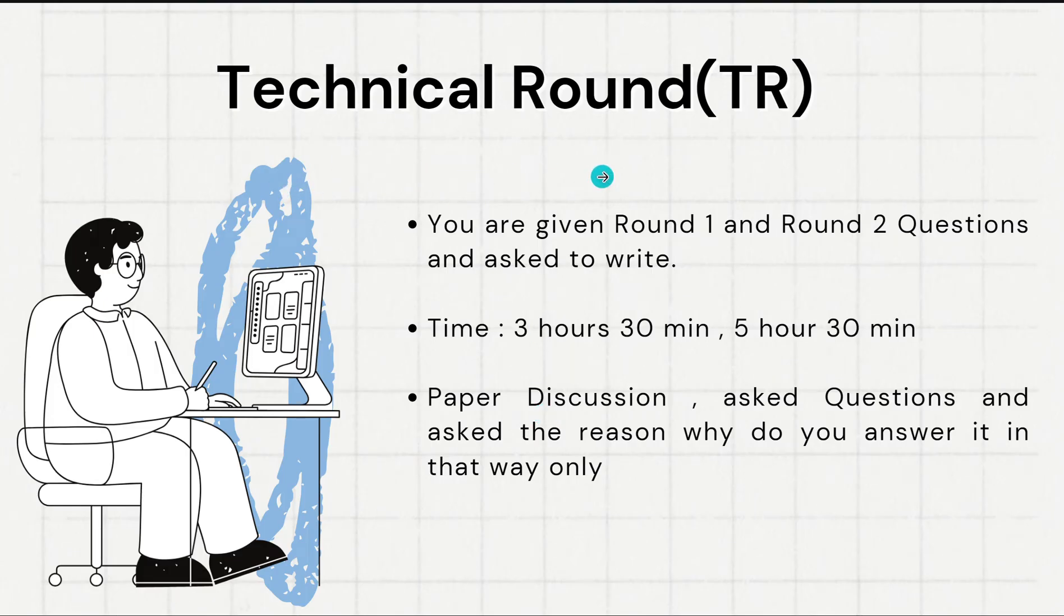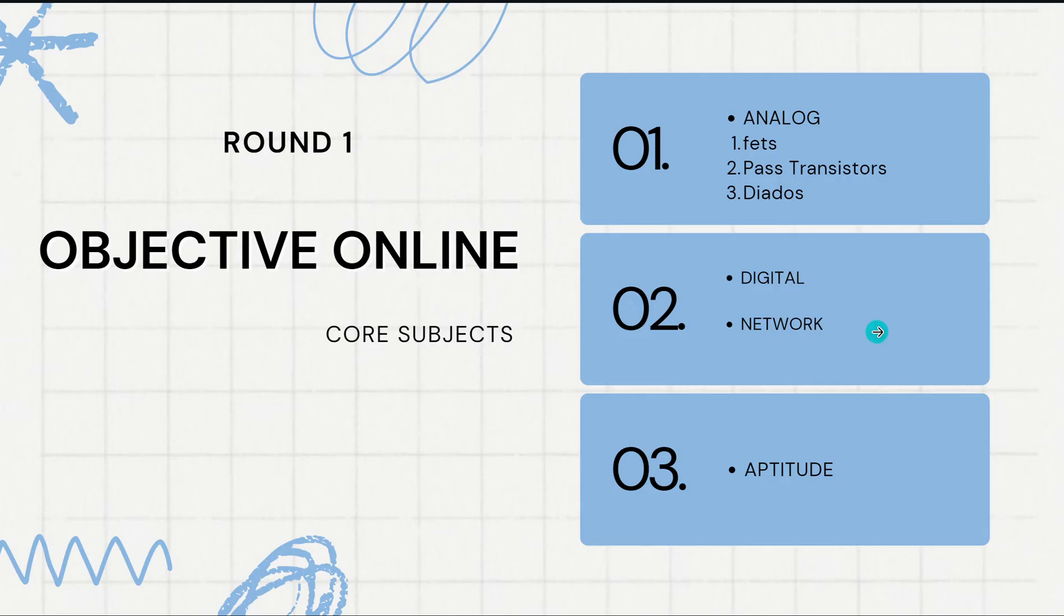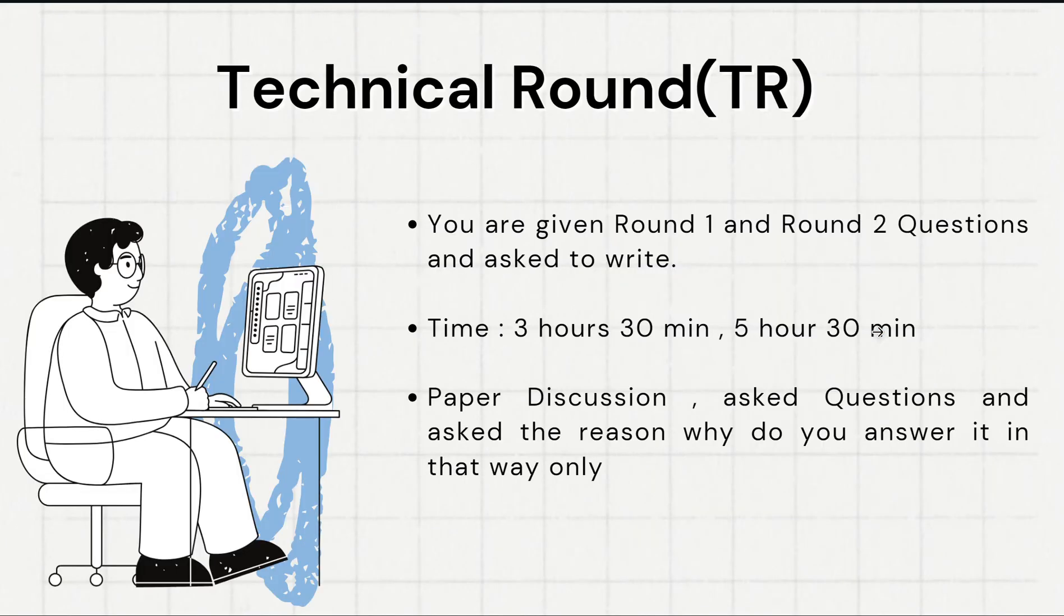Coming to the Technical Round, you are given Round 1 and Round 2 questions and asked to write. Time is nearly 3 hours 30 minutes to 5 hours 30 minutes. It is a round based upon paper discussion which you have attempted in Round 1 and Round 2. They will ask about these questions maximum, and ask questions and ask the reason why you answered it in that way only.